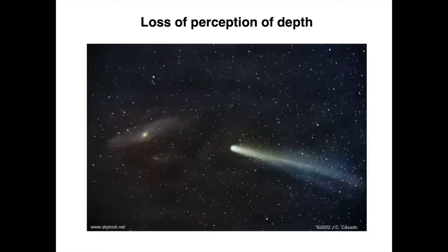When we look at the night sky, we are looking at stuff that is so far away that we lose the perception of depth. We're seeing, for example, a comet and a galaxy on the same frame. Of course, the comet and the galaxy are very, very far apart — the comet is like on our face and the galaxy is millions of light years away — yet they look very close on the plane of the sky because we're losing the perception of depth.